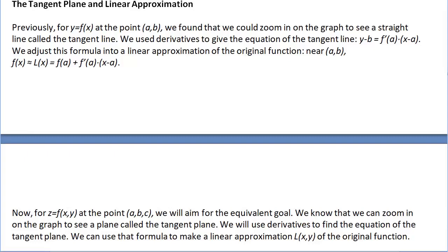If you calculate the derivative, that gives you the slope of that line and you can use it to find the equation of the tangent line: y minus b equals f prime of a times x minus a. Alternatively, using function notation, this is the linear approximation function — f of x is approximated by L of x, which equals f of a plus f prime of a times x minus a. Those two equations are just the same thing written differently.